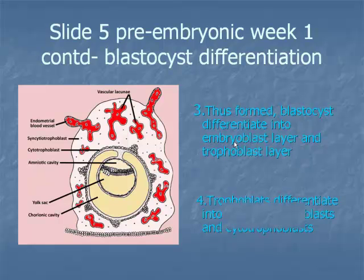At approximately day 6, the trophoblasts differentiate into syncytiotrophoblasts and cytotrophoblasts. The syncytiotrophoblasts then penetrate the endometrial epithelium and invade the underlying endometrial stroma.